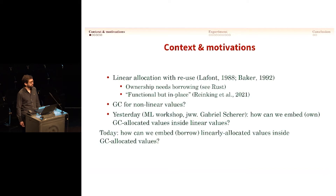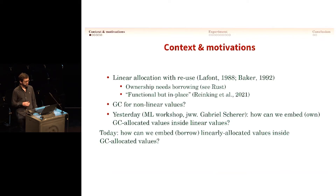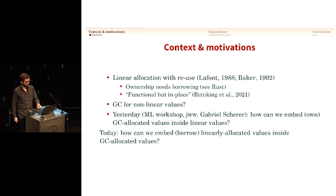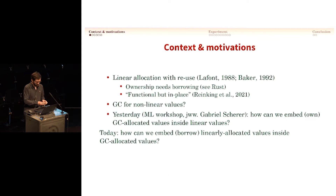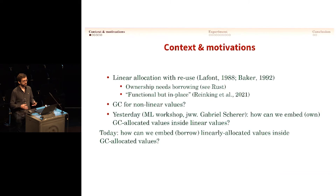I saw Dan Leijan yesterday. They call it functional but in place, and they solve the problem of mixing it with a form of copying simply by using reference counting. When they can dynamically detect that they are the sole owner of a value, they can reuse a cell instead of relocating somewhere else. They have nice benchmarks to show that this speeds up things, and it's used in languages like Koka and Lean. But reference counting — because of their setting, they can accommodate the limitations.